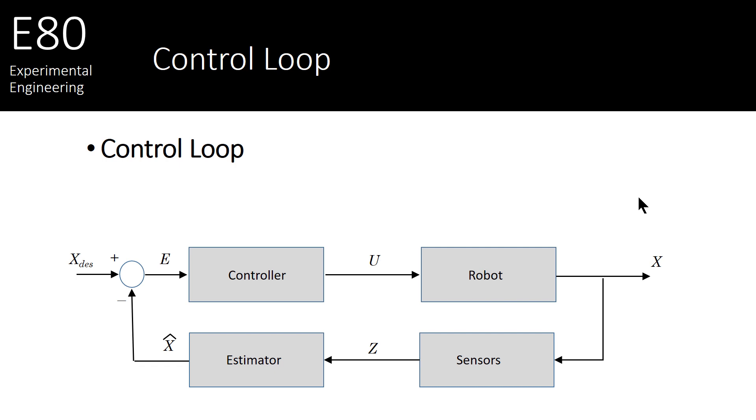Now answering that question, where am I, is going to be part of this control loop. You might remember this block diagram representation of a control loop from E79. In this case, the plant or the robot that we're actually going to control is one of these underwater robots that we've been building for the past couple semesters. Now to make this robot autonomously navigate, we have to determine the control signal or control effort to send to these thrusters. How fast should each thruster spin so that we can get to where we want to go?